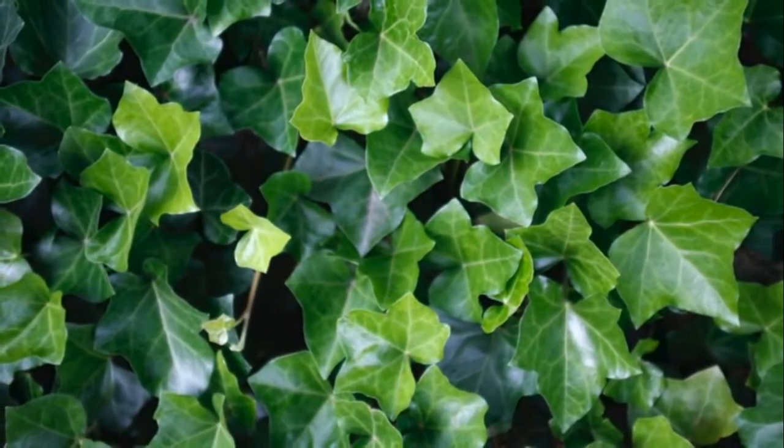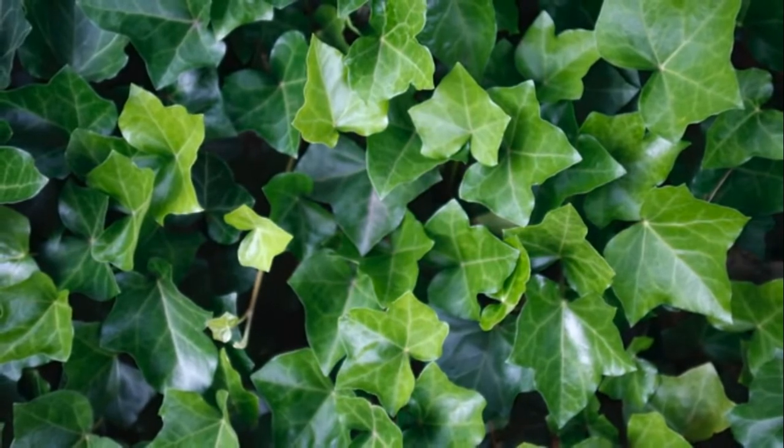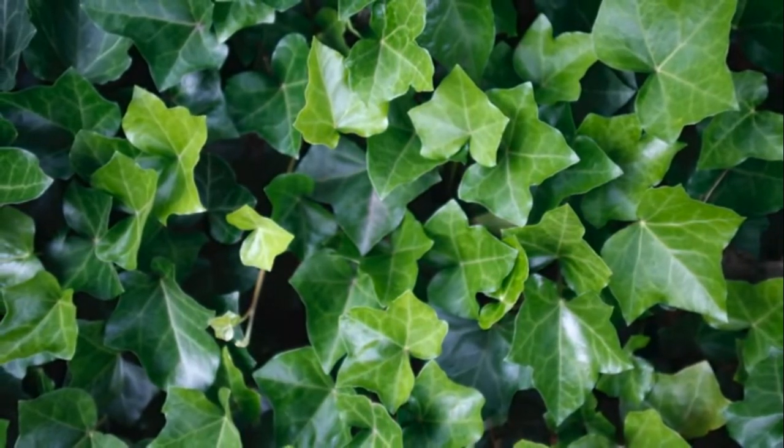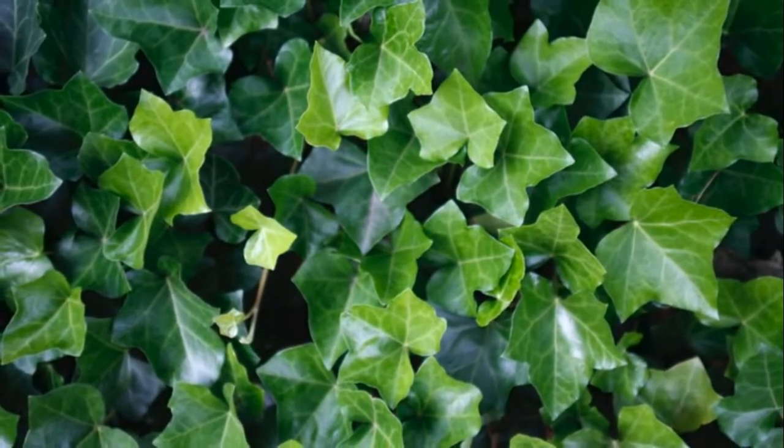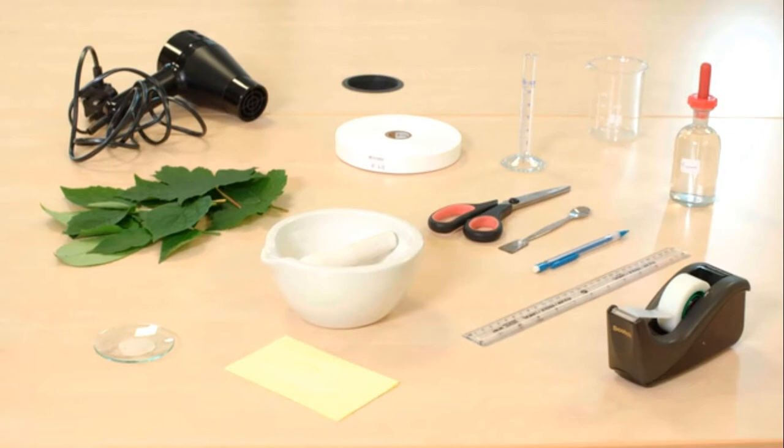In chemistry, finding out the content of mixtures is important, and chromatography is a technique that can be used to find the individual components in a mixture. In this experiment, the pigments in a leaf will be separated by paper chromatography.